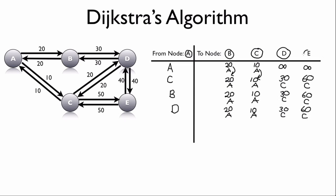For completion, we examine node E. E connects to C and D, but we've already found the best possible paths to both. To verify: going from E to C would cost 60 + 50 = 110, which is far worse than 10. We've now confirmed the best paths from node A to all other nodes using Dijkstra's algorithm.